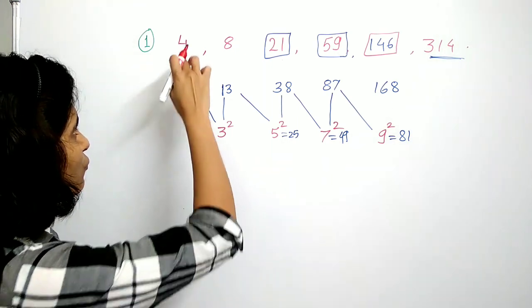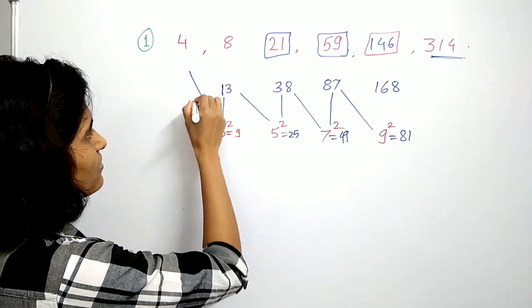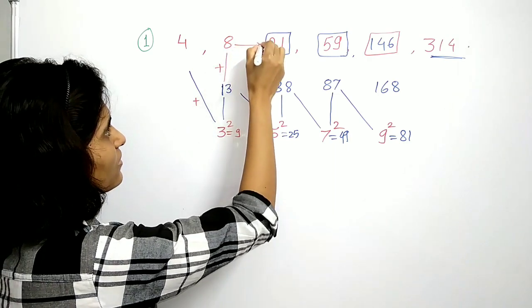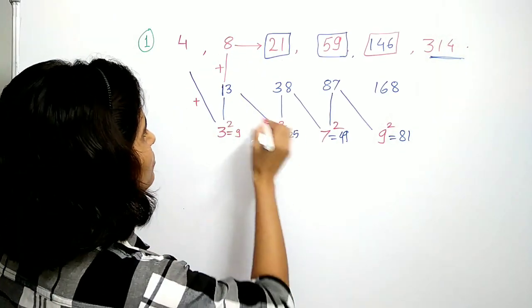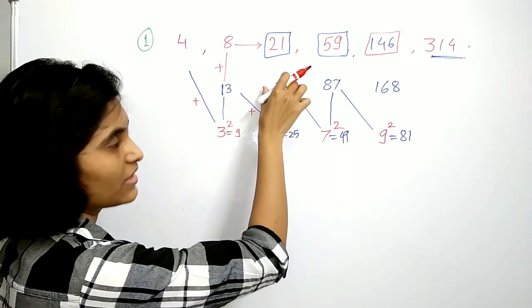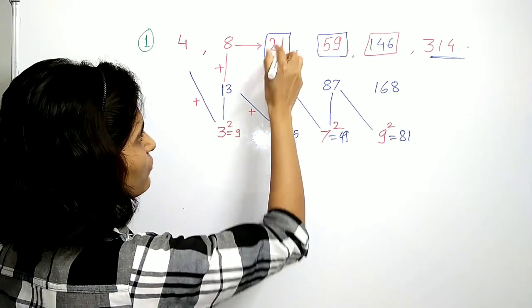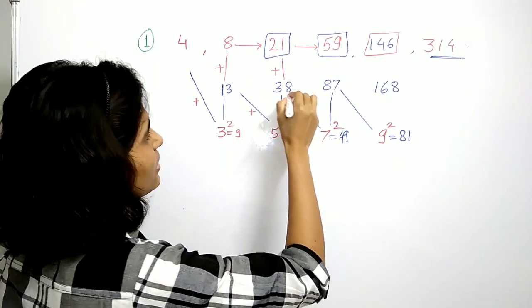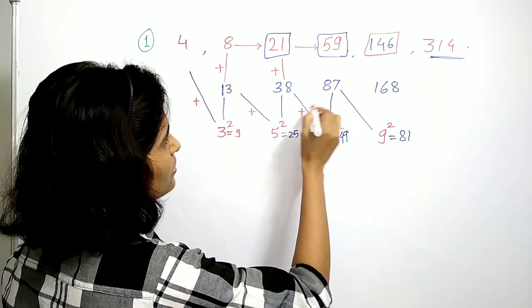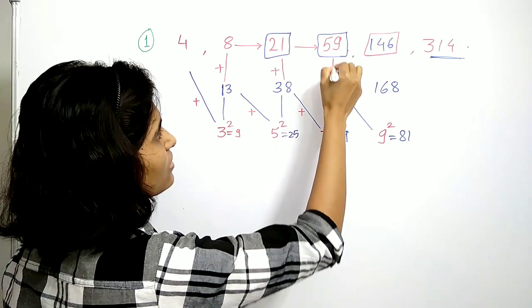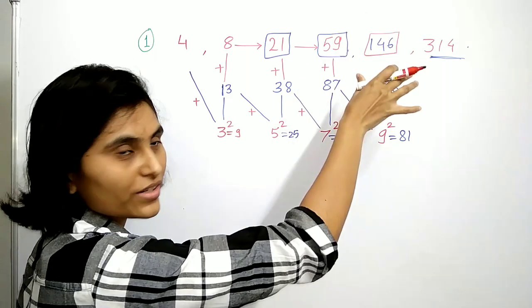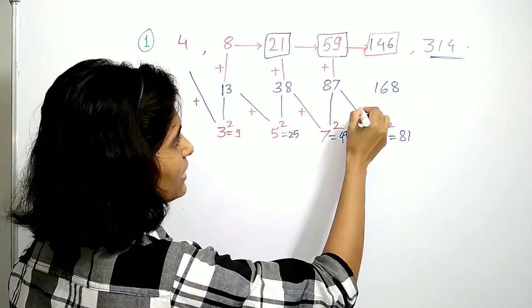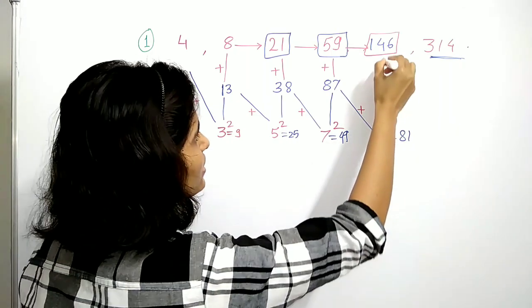Let me explain it again. 4 plus 9 gives us 13. Now 8 plus 13 gives us 21. Now 13 plus 25 gives us 38. 38 plus 21 gives us 59. Again, 38 plus 49 gives us 146. Similarly, we are adding 87 and 81 to get 168, and finally add these two, we will get 314.